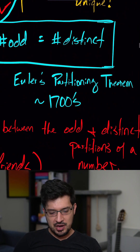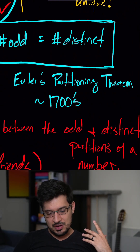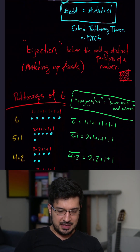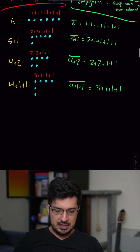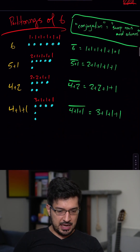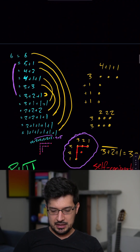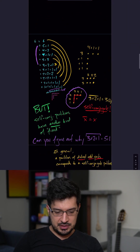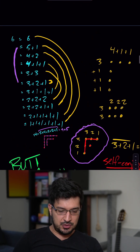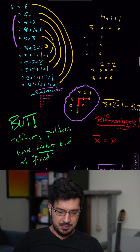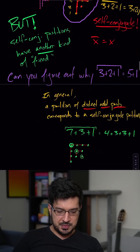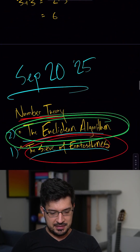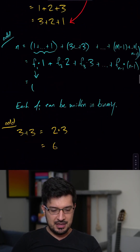This is hundreds of years old. It's known as Euler's partitioning theorem, at least that's what I call it. And then we talked about some other related things that I won't get into right now. But just trust me that this stuff is very beautiful if you pause the video and try to think about it a little bit.